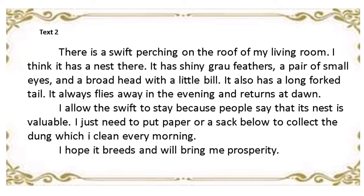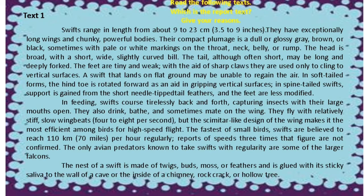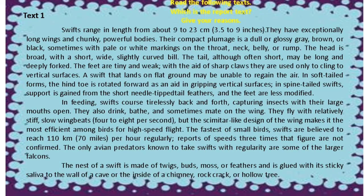Good. Text one is an information report text because it describes swift in general. Meanwhile, text two is a descriptive text because it describes a particular swift which perches on the roof of the writer's living room. Nah, sekarang kita perhatikan kembali text one. Akan ada beberapa pertanyaan.